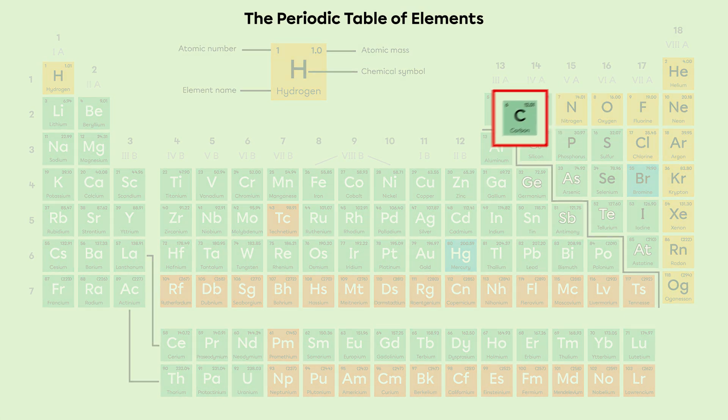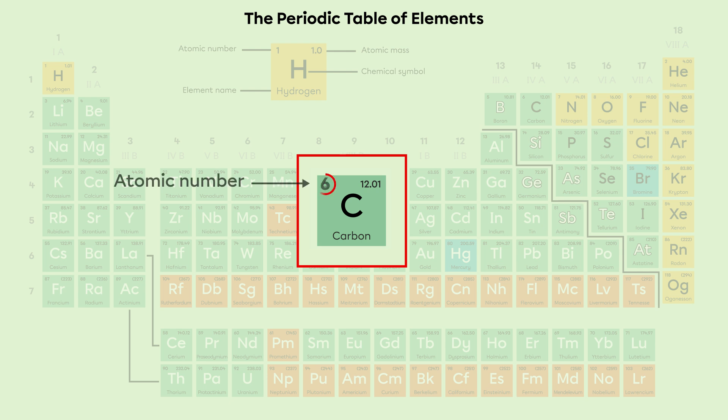For example, the atomic number of carbon is 6. It has 6 protons. The atomic number of magnesium is 12. It has 12 protons.